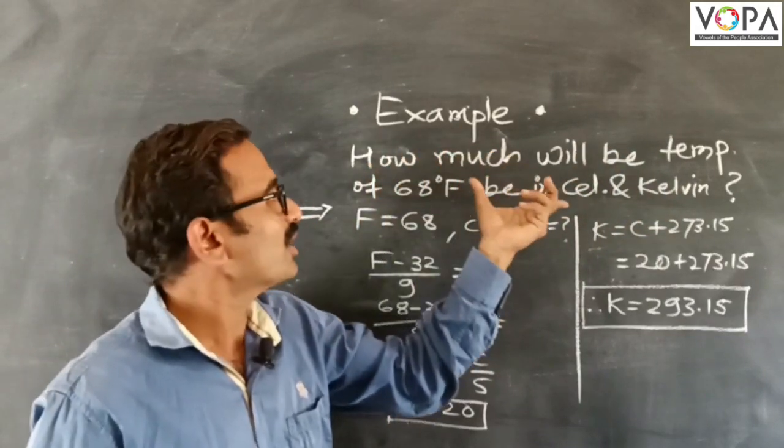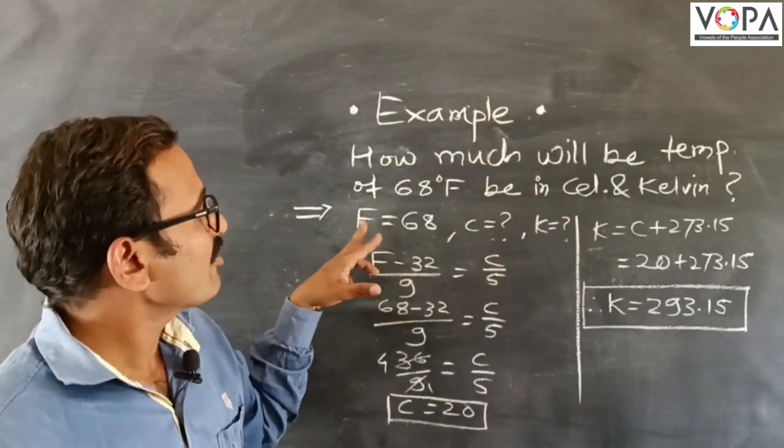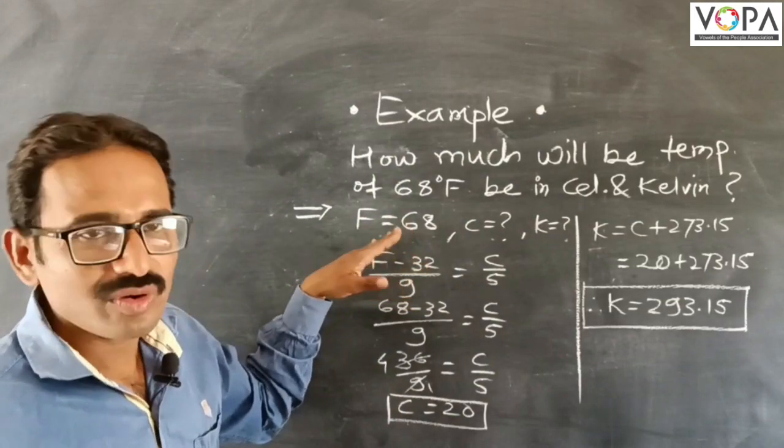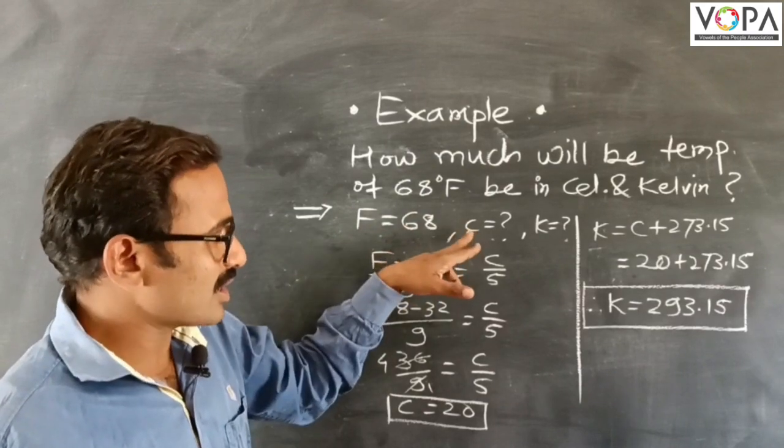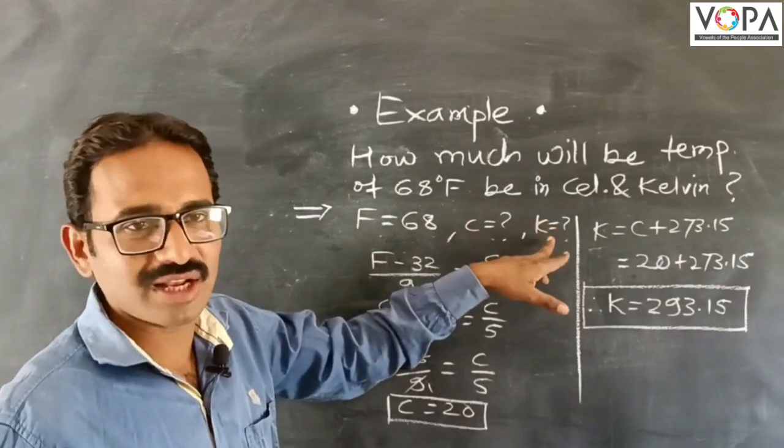We have given here an example. Here we have Fahrenheit temperature is 68 degrees. Now we need to translate this into degree Celsius and Kelvin temperature.